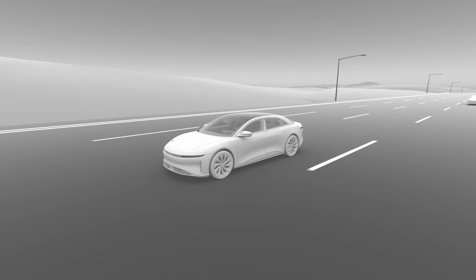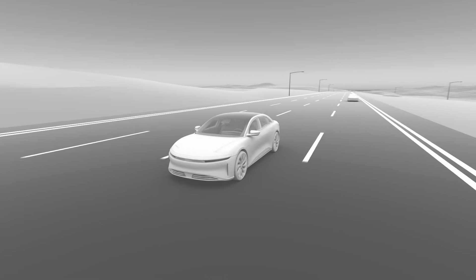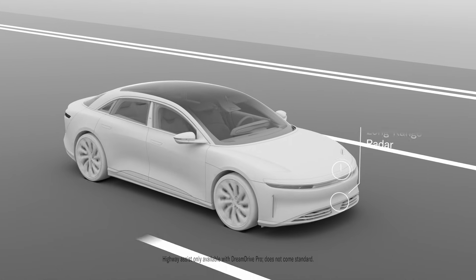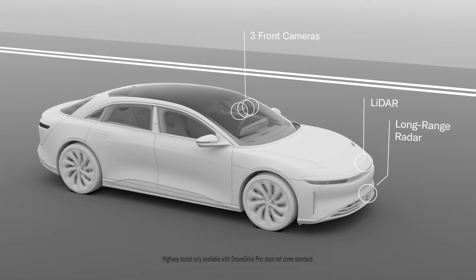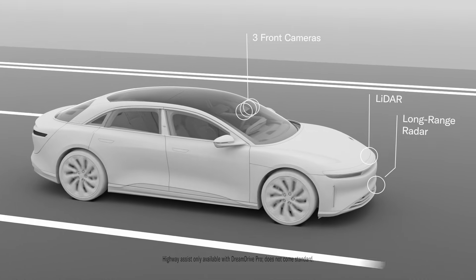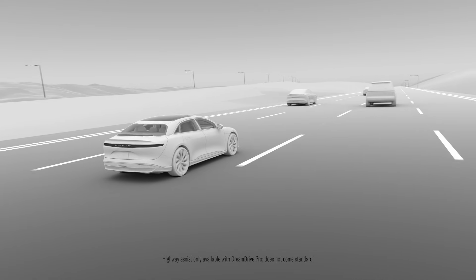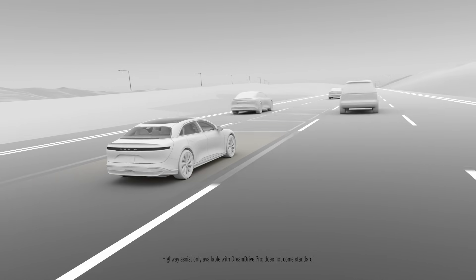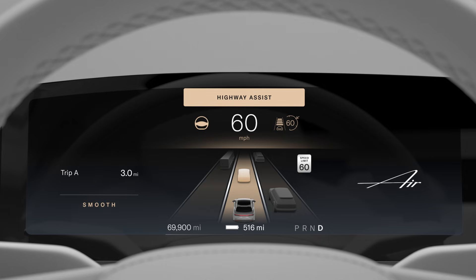On supported highways, you can also use Highway Assist, which utilizes your vehicle's front cameras and sensors to help you steer and actively center your vehicle in the driving lane. Like adaptive cruise control, it also helps adjust your speed to maintain a safe following distance from the vehicle in front of you.